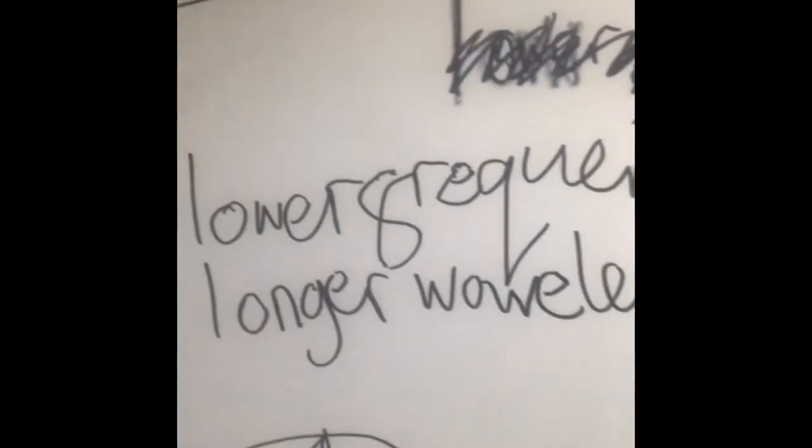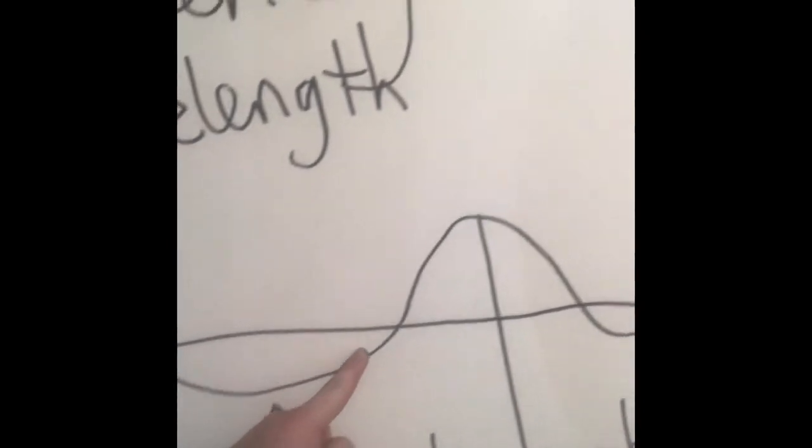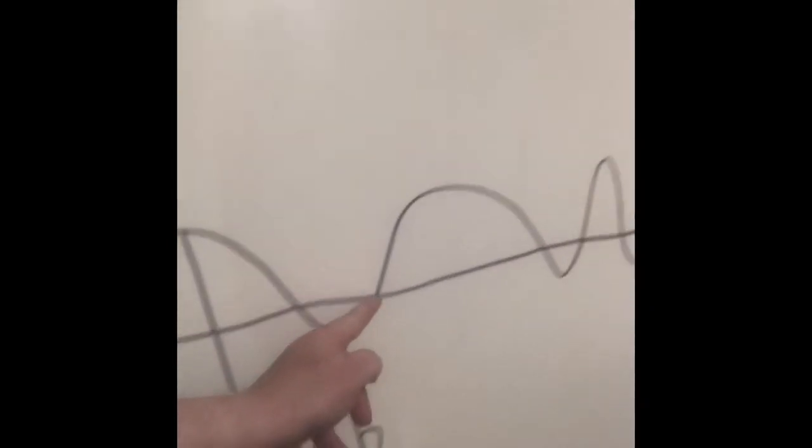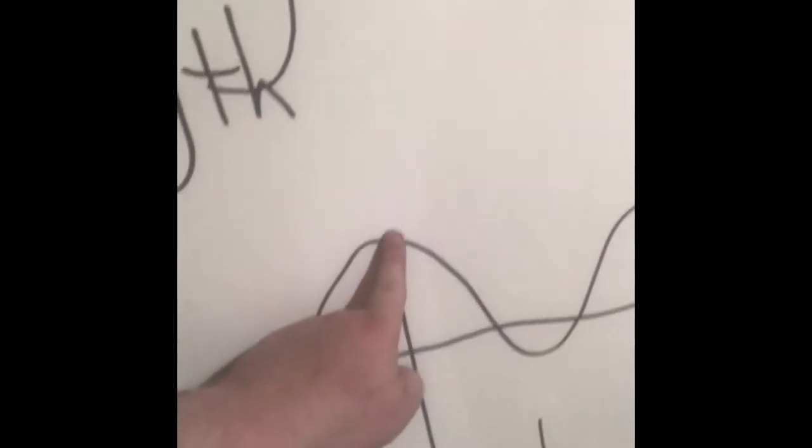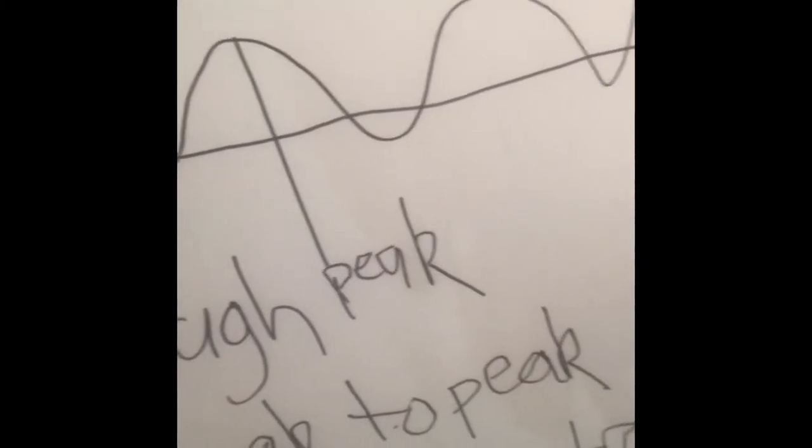When we talk about wavelength, we're talking about peak of the wave. This is a wave. Peaks and troughs, peaks and troughs. That's what a wave is. Peak to peak is one wavelength. Peak to peak, or trough to trough. Sorry, trough to trough is one wavelength. That's wavelength. Peak to peak, or trough to trough.